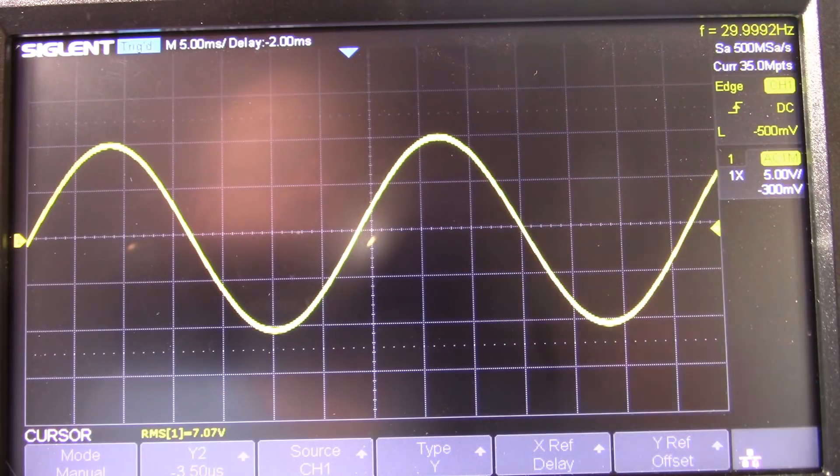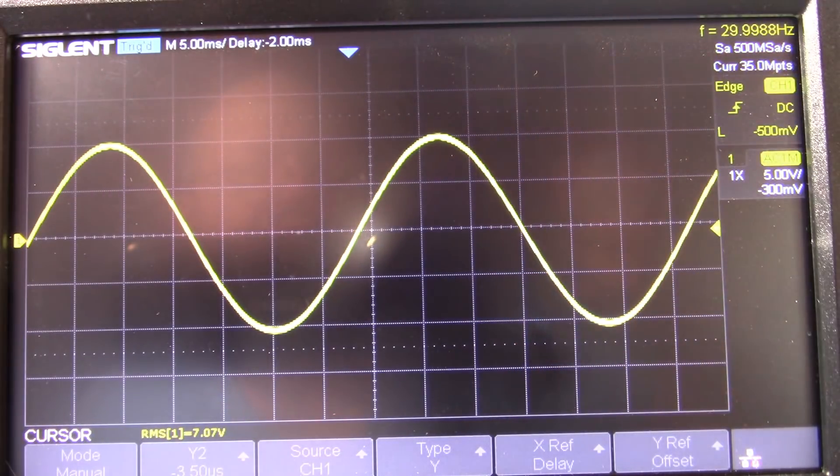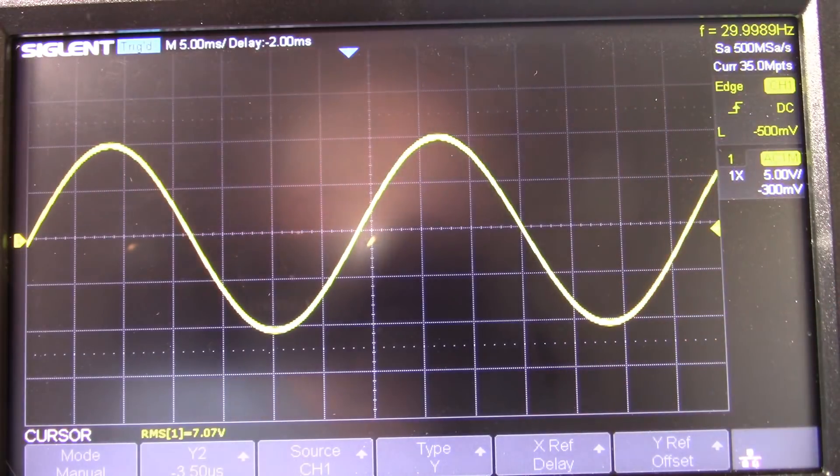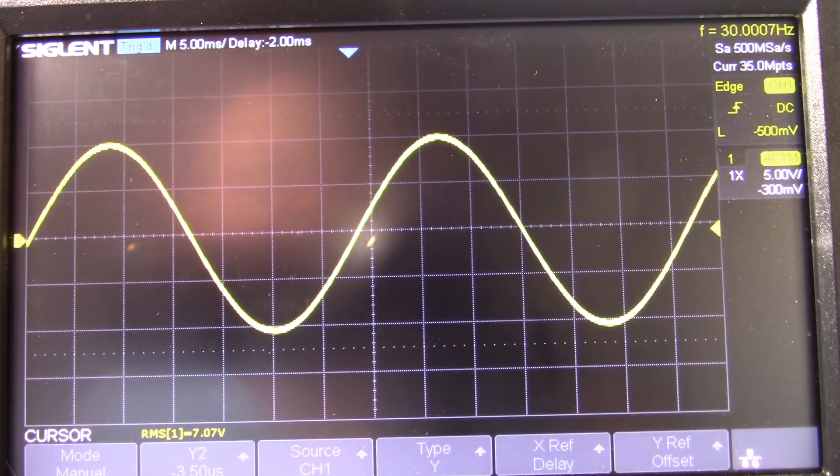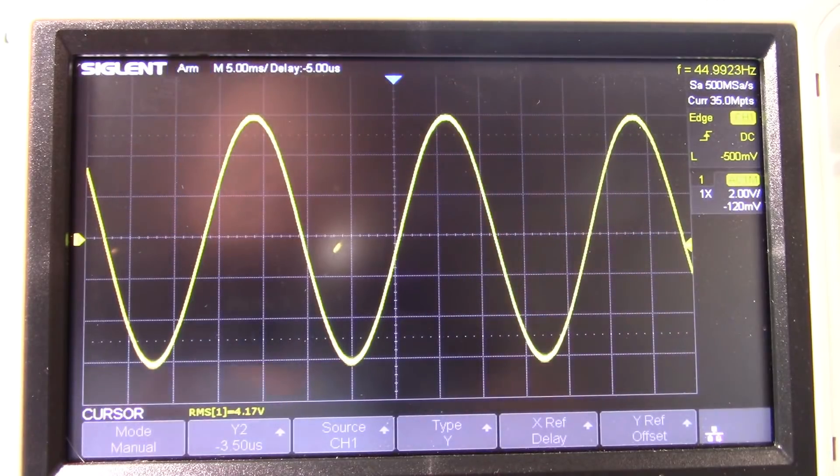The subwoofer channel is handled by one of the chips. The chip has two bridged outputs and they combine those two outputs together called paralleling, so it's a parallel bridge output. When you parallel amplifiers together it does not increase the amplitude of the signal, it does allow you to use a lower impedance load. The limitation with this board is the size of the heat sink, it's not the ICs themselves.